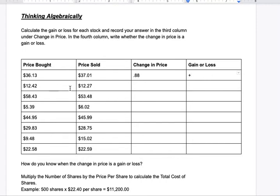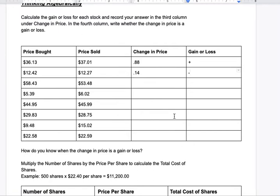All you're doing is finding the difference between the two prices. For the second one: $12.42 and $12.27. I already know this is going to be a loss. When you sell it, $12.42 minus $12.27 is $0.15, and it's a loss, so you'd write a minus. Go ahead and work through these — you're getting the difference, writing that number in the column, and writing a plus or minus. Positive means you gained money; negative means you lost money.